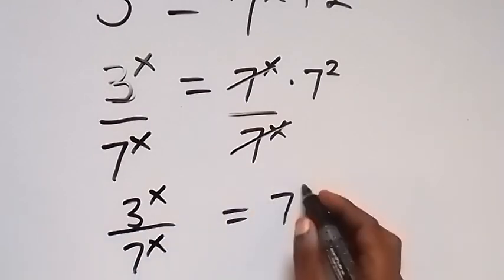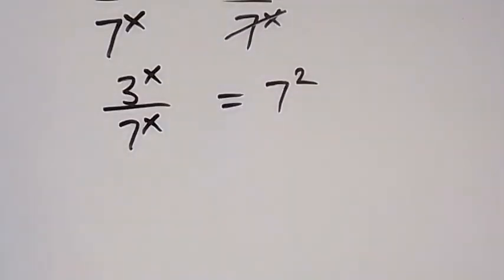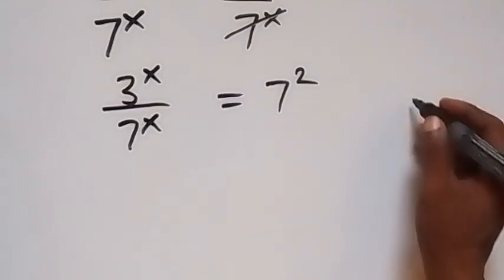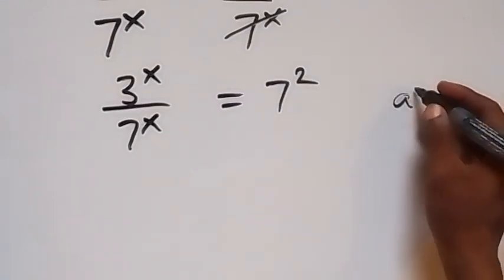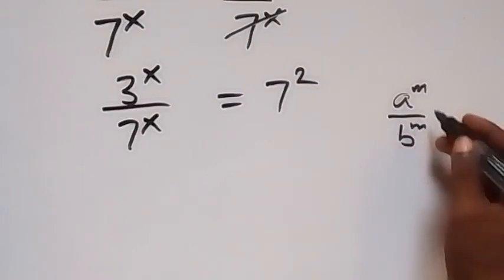This equals 7 raised to power 2. From here we can write this again from the law of indices: when we have a raised to power m divided by b raised to power m, this becomes a over b raised to power m.